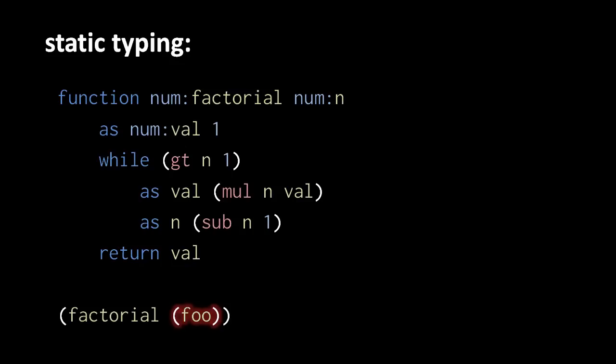Even if the argument expression is a variable or function call, such as here a call to some function foo, an erroneous type can be detected because with type declarations, the type of every expression is known. Here function foo itself must have a declared return type, and so the compiler or interpreter knows whether this call to foo will return a number.